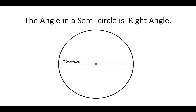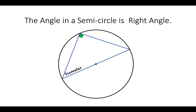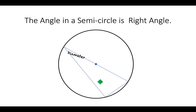I'll show you some examples here. We've got a diameter drawn there — a diameter is a straight line through the centre of the circle from one side to the other — and when we make a triangle inside the semicircle we get a right angle. Same when we do it like this: another right angle, and when we do it like this we get another right angle. You will always get a right angle there. That's the first circle theorem.